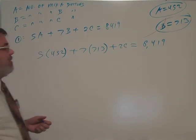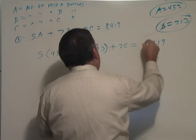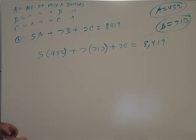So we have 5 times 452 plus 7 times 713 plus 2C equals to 8,419. All right, I'm going to clean up my 8 here. That's better.